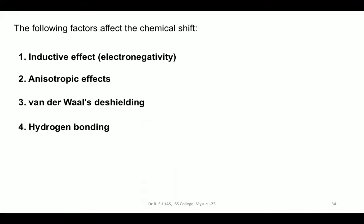There are four important factors that govern the values of chemical shift: electronegativity (also called inductive effect), anisotropic effect, Van der Waals deshielding, and hydrogen bonding. We will deal with all these in detail one by one.